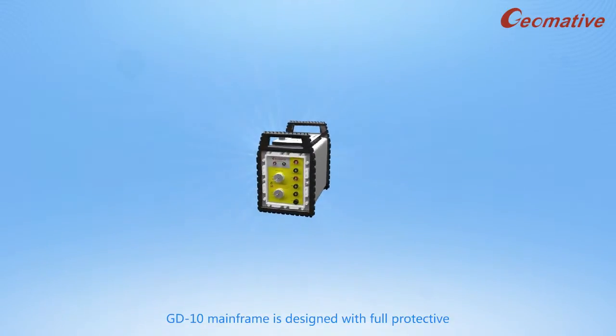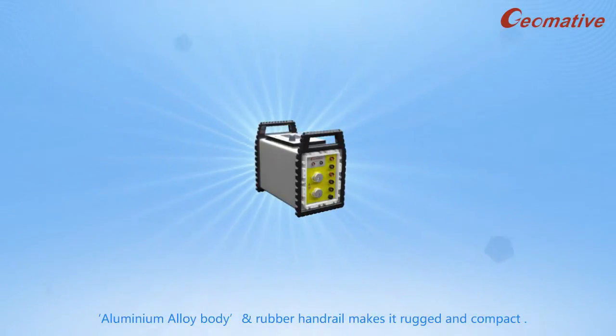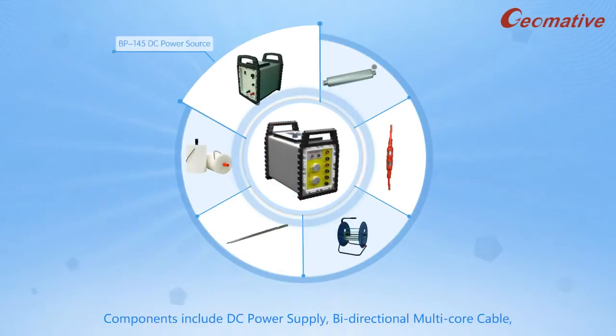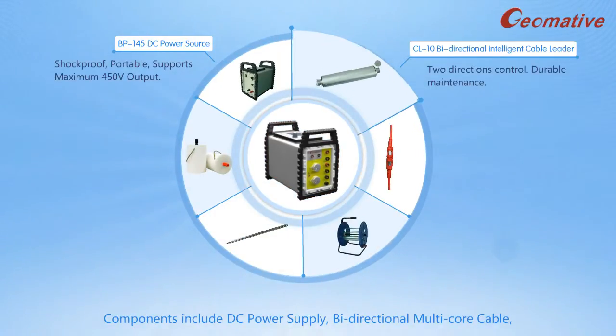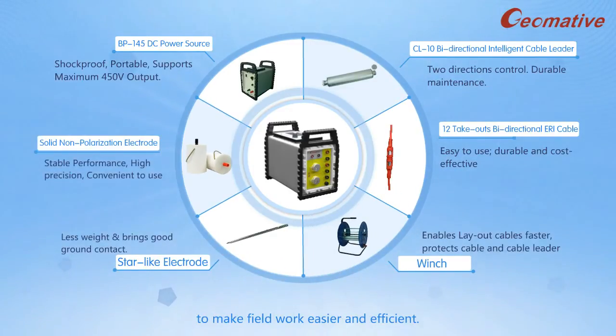The GD-10 mainframe is designed with a fully protective aluminum alloy body and rubber handrail, making it rugged and compact. Components include DC power supply, bi-directional multi-core cable, cable leader, winch, and star-like electrode to make field work easier and efficient.